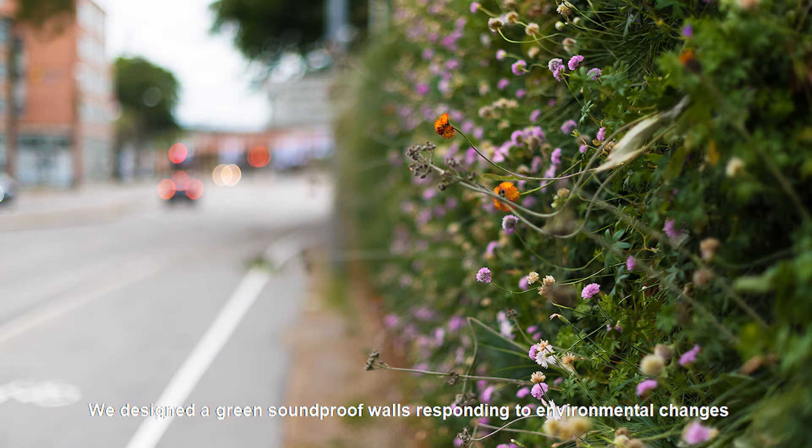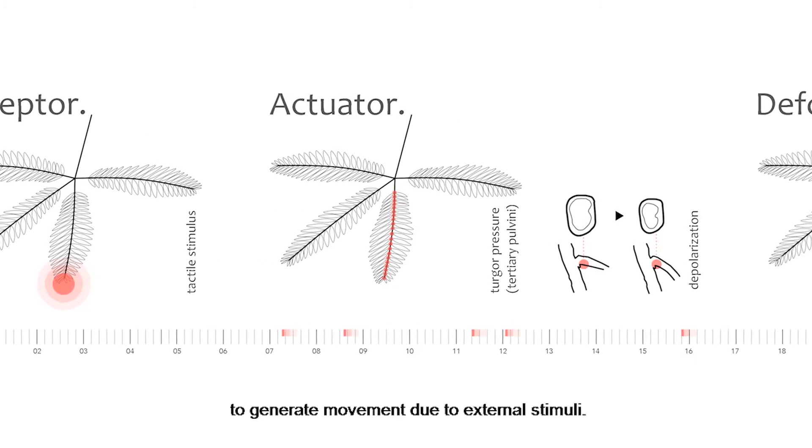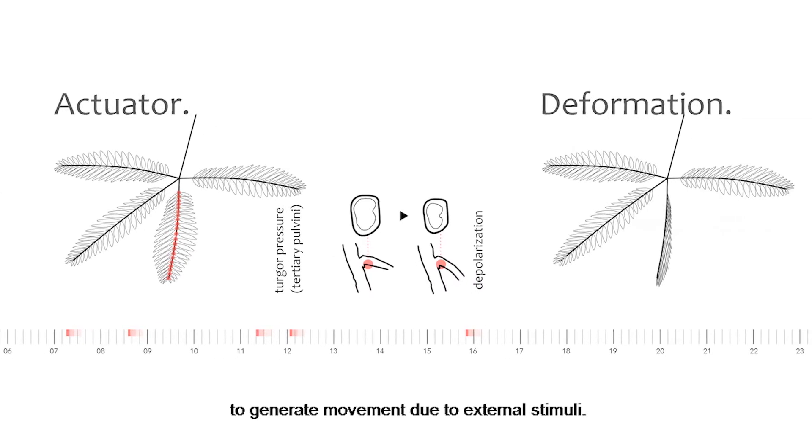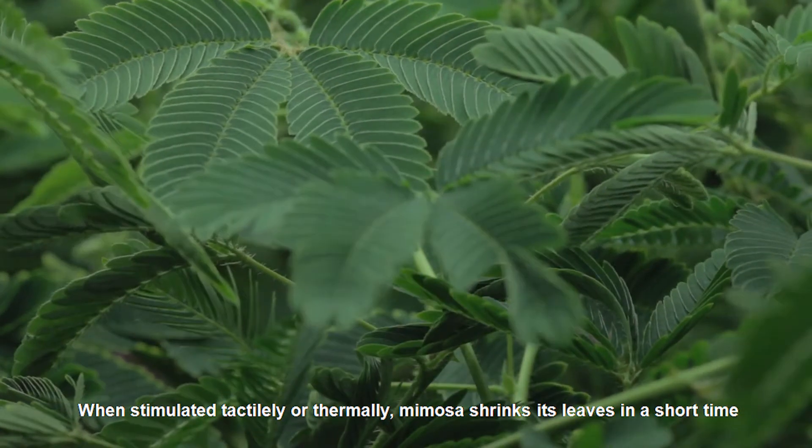We designed a green soundproof wall responding to environmental changes. Mimosa has been known for using turgor pressure to generate movement due to external stimuli. When stimulated tactilely or thermally, Mimosa shrinks its leaf in a short time.